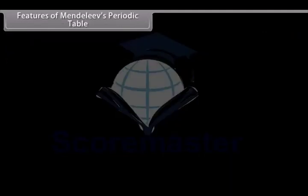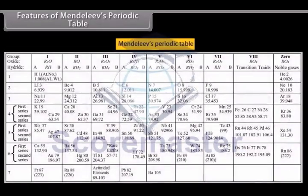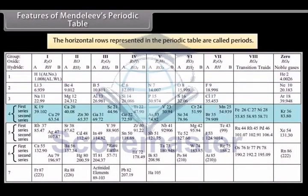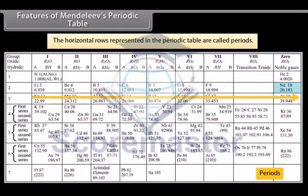Features of Mendeleev's Periodic Table. Mendeleev's Periodic Table has the following features. The horizontal rows represented in the Periodic Table are called Periods. There are 7 Periods in the Periodic Table numbered from 1 to 7.